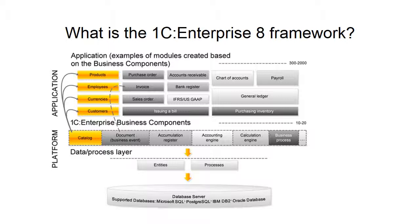This diagram of a business application shows the internal architecture of 1C Enterprise solutions. The data process layer supports various system features such as support for a variety of databases, an application server, web server components and web services.